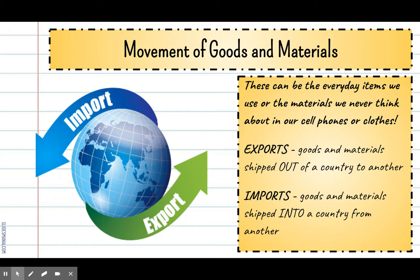There are two very important key terms here: exports and imports. The prefix of those words is what's going to be very important. For exports, the prefix E-X reminds me of exit or leaving — so exports are goods and materials that are shipped out of a country to another. Something is created or made in the United States and then shipped to another country. The opposite is also true: imports are goods and materials that have been shipped into a country from another. The prefix IM means bringing in or coming into.